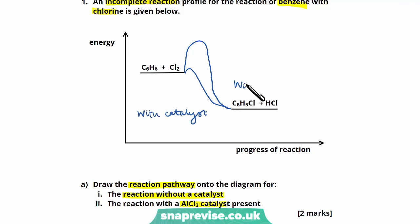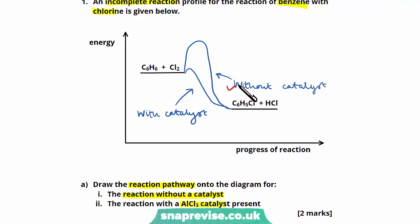This is a nice and simple way to gain those first two marks — one mark for showing the pathway without the catalyst, and a second mark for showing a pathway with a lower activation energy with the catalyst present.